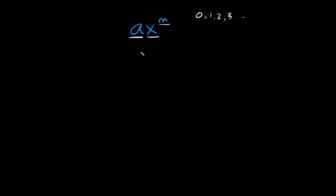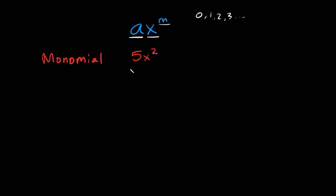So for example, something like 5x squared — this is a term. It's also a polynomial, because remember, a polynomial can be just a term by itself or a combination of terms by adding and subtracting them. But more specifically, you would call this a monomial. Monomials are made up of just one term, so since we just have one term right here, it's called a monomial.